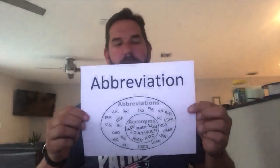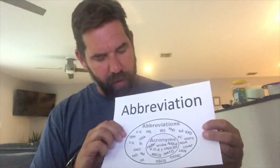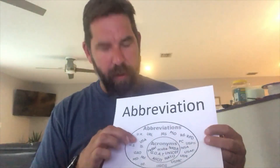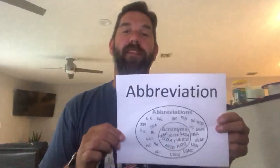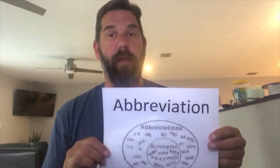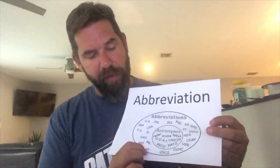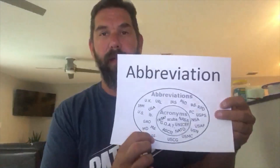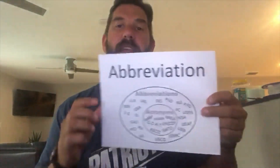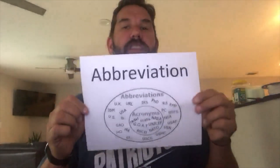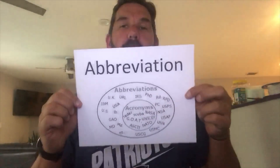So, on our paper here, we have a couple of different abbreviations. One, we have USA. USA is an obvious abbreviation for the United States of America. Also, we have the abbreviation OZ, period, which is the abbreviation for ounce.